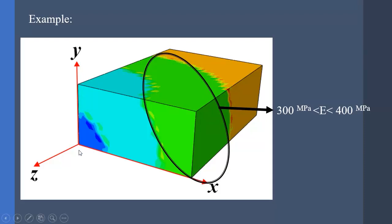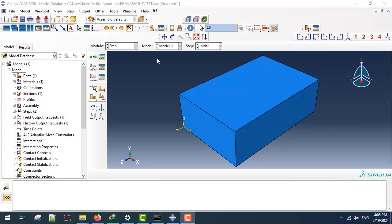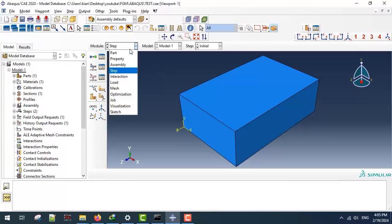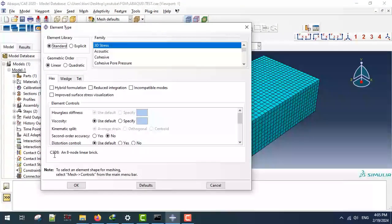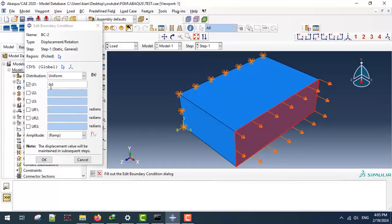Next I'm going to show how we can implement these ideas into a USDFLD subroutine. The body has dimensions 1 by 2 by 3 meters as shown in the figure. We assume the elastic modulus depends on material point distances from the origin, so when d equals specific values, changes in E will be made — for instance, when d equals 1 meter, the elastic modulus is in the range of 200 to 300 MPa. In the CAE model, the step is static general with non-linear geometry set to on, using C3D8 elements, and the body is under a tension load.